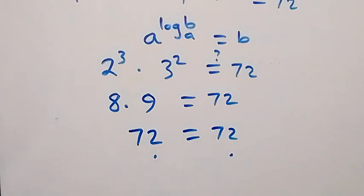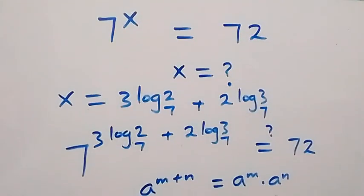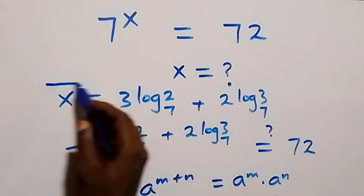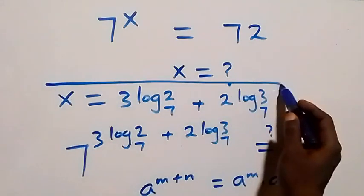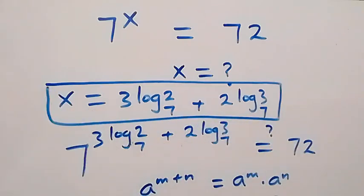The answer is correct. We conclude that the value of x is 3 log₇2 plus 2 log₇3. Thank you for watching — don't forget to subscribe for more exciting videos, turn the notification bell on, share this video, and give a thumbs up. See you next class, bye for now.